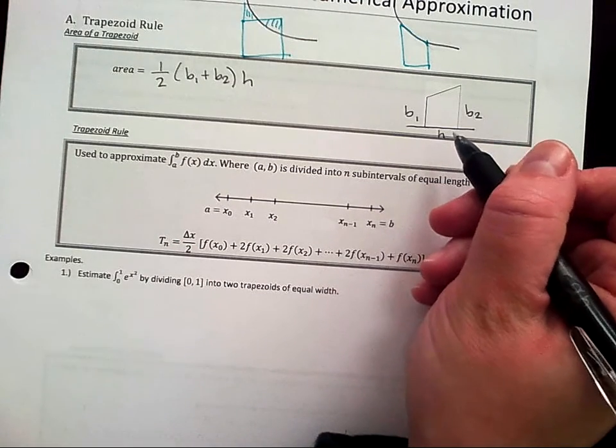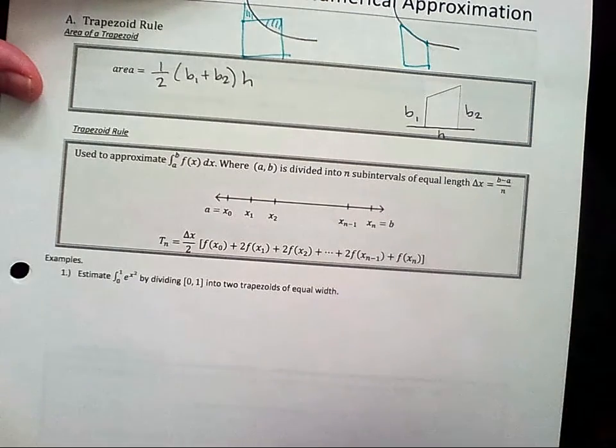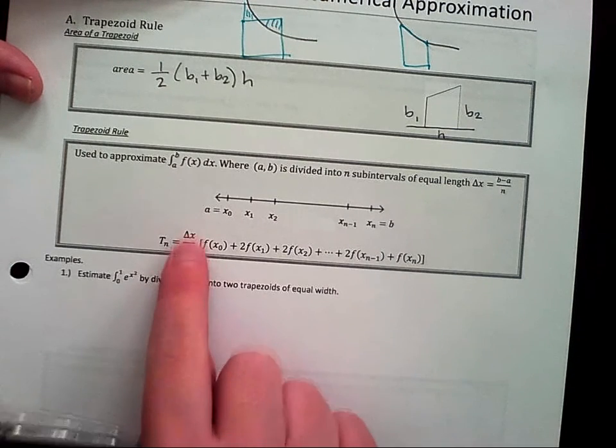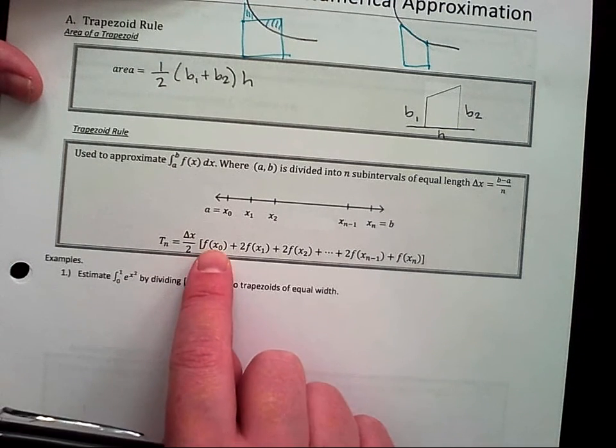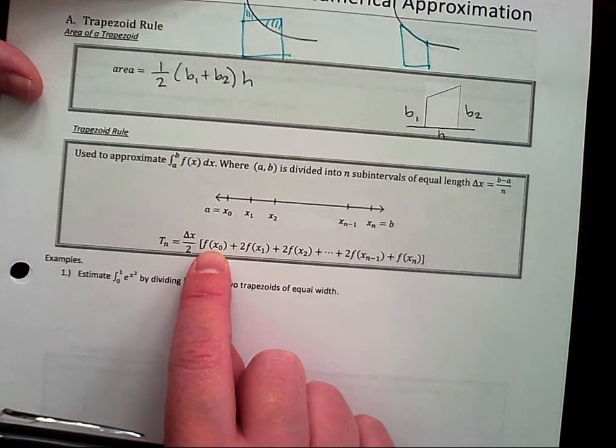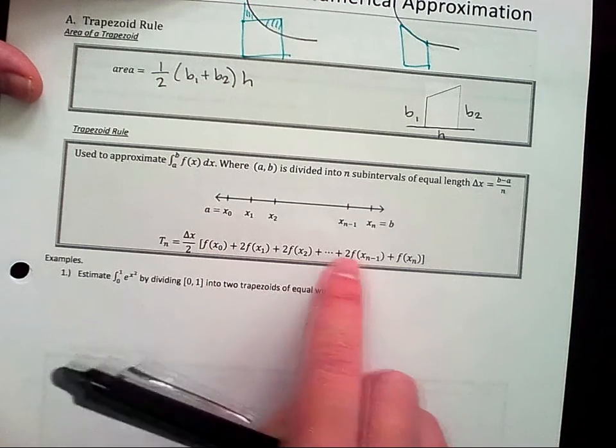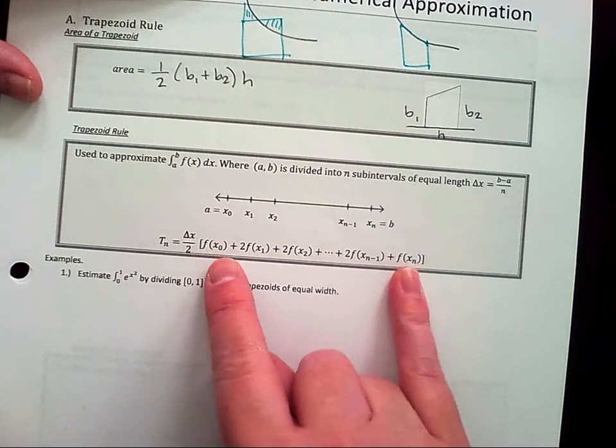It doesn't look like the height, but that's what it is. So you have delta x over 2 times f of the left endpoint plus 2 times the inner points and 1 times the endpoints.